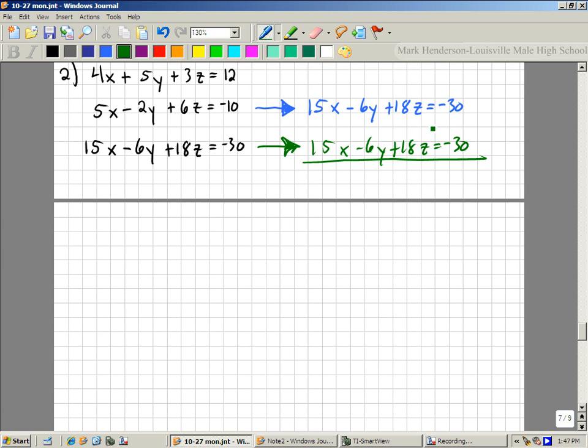So here, when I add these up, I get 0x plus 0y plus 0z equals 0. Because I'm going to subtract here, right? So I subtract each spot, and negative 30 minus negative 30 is 0. So 0 equals 0 equals 0. Is that true? Always?